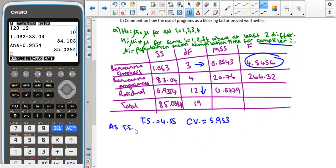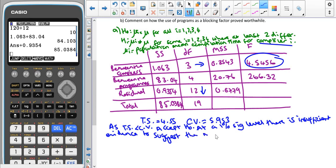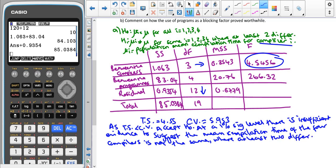As the test statistic is smaller than the critical value, that means we accept H₀. At a one percent significance level, there is insufficient evidence to suggest the mean compilation time of the four compilers is not the same where at least two differ.